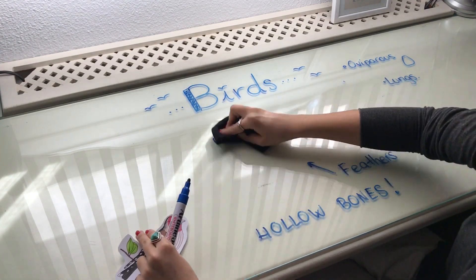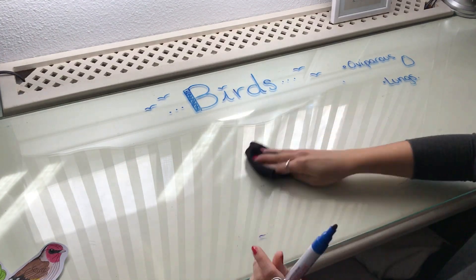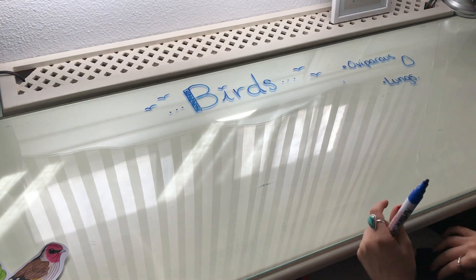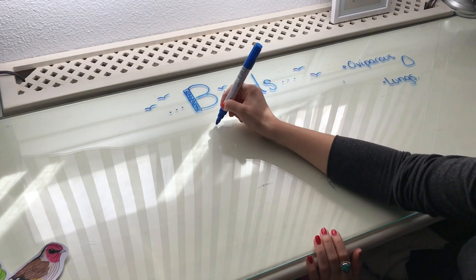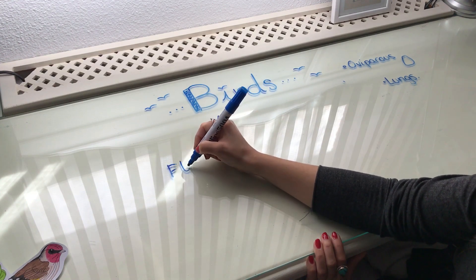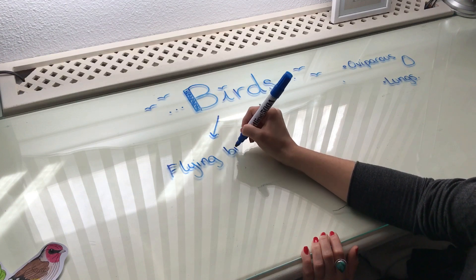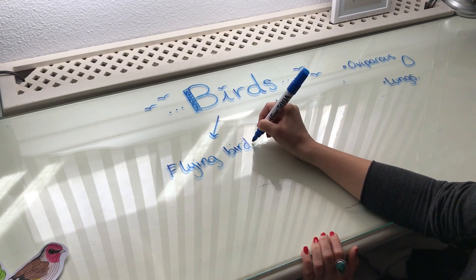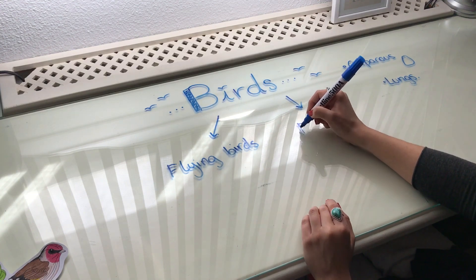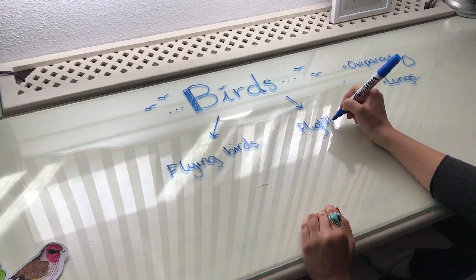To finish up with birds, we are going to talk about the types of birds. We have two main types: the most common ones are called flying birds, and the other type are called flightless birds.